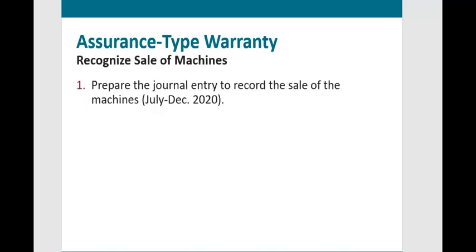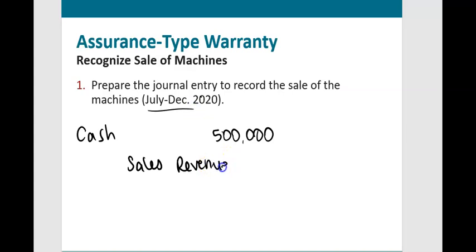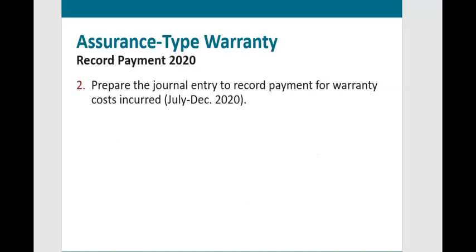Let's work through the journal entries step by step. First, prepare the entry to record the sales of the machines. We record cash of $500,000 and offsetting sales revenue of $500,000 for machine sales from July through December 2020. With an assurance type warranty, in 2020 we need to record the entire estimated expense of $20,000.